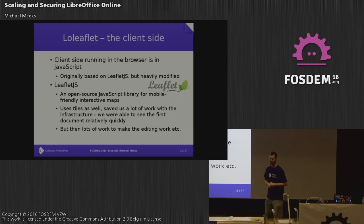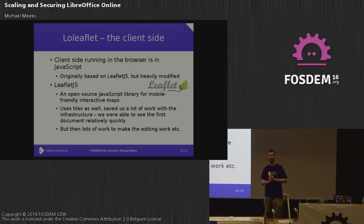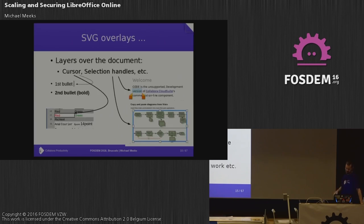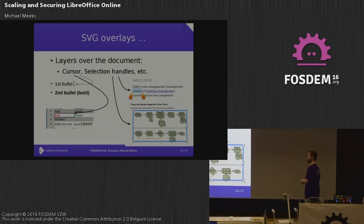Leaflet is originally a map library, so your document is actually a map. The map library has code for spherical projections that we turn off, because documents thus far are not mapped onto a globe. It uses tiles and saves us a lot of infrastructure work — we get gestures and other pieces quickly, and then there's a lot of additional work on top of that to do the editing as well.